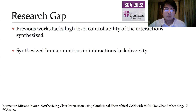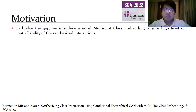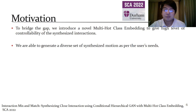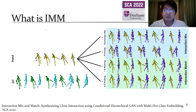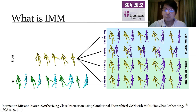The research gap is that previous works lack a high level of controllability of the synthesized interaction, and the synthesized human motions lack diversity. To bridge this gap, we introduce the novel concept of multi-hot class embedding to give high-level controllability. This allows the user to generate interactions as they see fit. Given a leader interaction, our method is able to generate follower reactions as per the user's needs — for example, if a person is kicking, we can generate reactions of exchanging objects, pushing, or even a mix of these, which we call 'interaction mix,' and we can also control the intensity, which we call 'interaction match.'